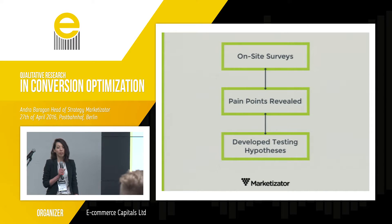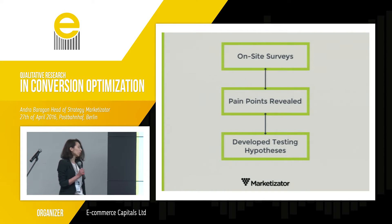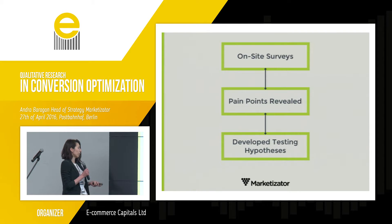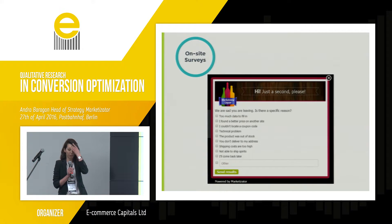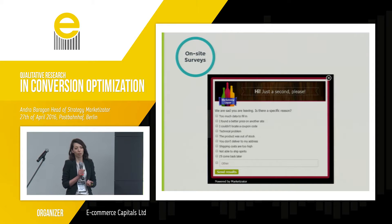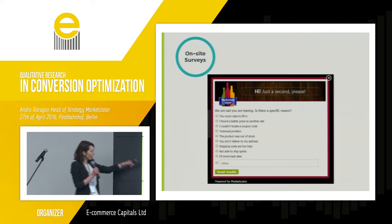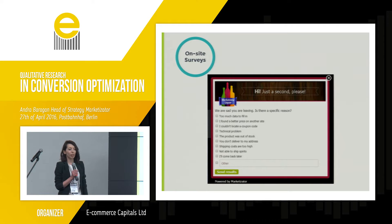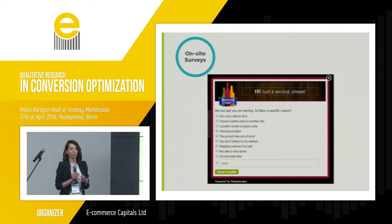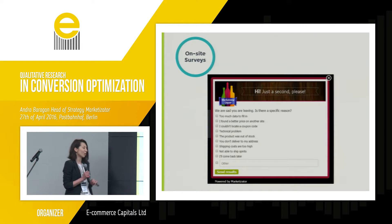We ran on-site surveys to find out why visitors were leaving the product page and why they weren't buying. The survey revealed pain points, which developed testing hypotheses that we afterwards implemented. The on-site survey asked: 'We are sad to see you leave. Is there a specific reason?' What we found out was that most users' issue was pricing — the pricing of the wines. And through the 'other' answer, we found they were anxious about whether they could choose the right wine. Their lack of knowledge in the wine domain blocked them — they had decision paralysis.